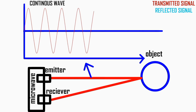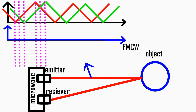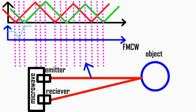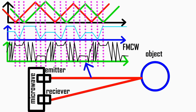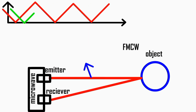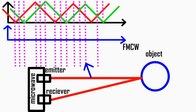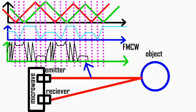Frequency-modulated continuous wave radar sensors (FMCW) emit a continuously changing frequency signal and measure the frequency difference between the emitted and reflected signals. This allows for more precise distance and speed measurements and is often used in industrial automation and distance measurement applications.